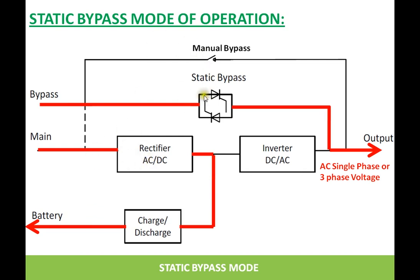What is the difference between static bypass and manual bypass? The static bypass has voltage regulation. The SCRs regulate the voltage: if the incoming voltage is high, it decreases the voltage fed to the output; if the incoming voltage is low, it increases the voltage fed to the output. So the static bypass switch acts as a voltage stabilizer.